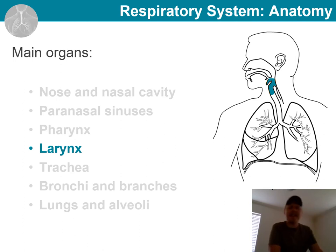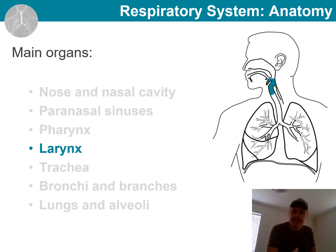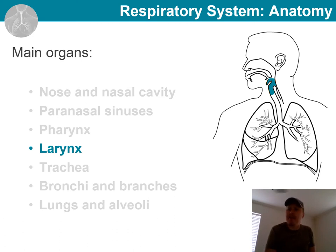The next structure we will look at is the larynx. This is sometimes referred to in layman's terms as our voice box, but it does much more. It runs from the third to sixth cervical vertebra, attaching superiorly to the hyoid bone. It also opens posteriorly into the laryngopharynx, and anteriorly it is continuous with the trachea.